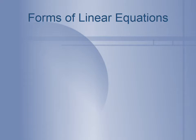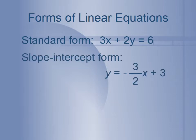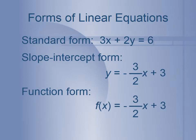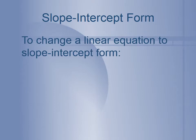Let's review the forms of linear equations. We learned the standard form: Ax plus By equals C. Then we have the slope-intercept form: y equals mx plus b. And then we also have the function form — instead of saying y, we say f of x, so it becomes f of x equals mx plus b. On our example, we started with 3x plus 2y equals 6. In slope-intercept form it becomes y equals negative 3 halves x plus 3. In function form it becomes f of x equals negative 3 halves x plus 3.